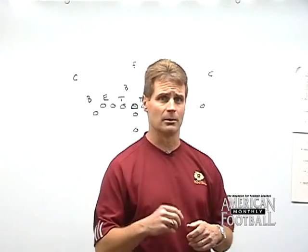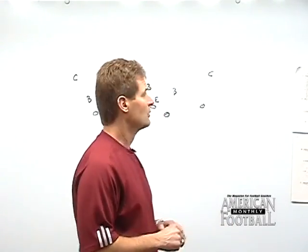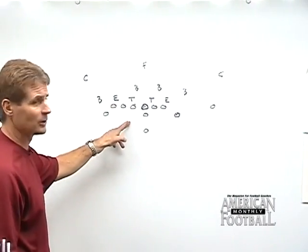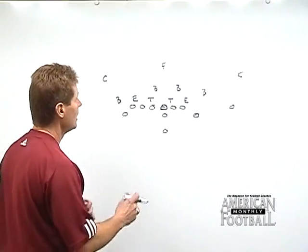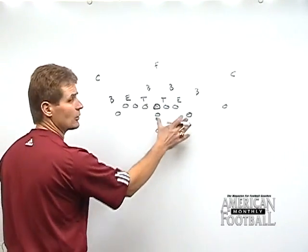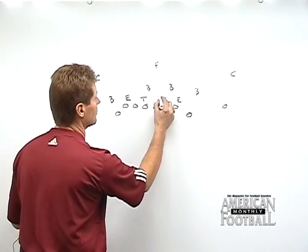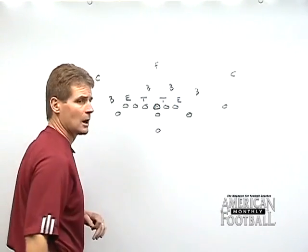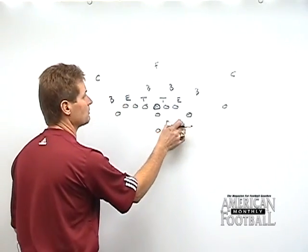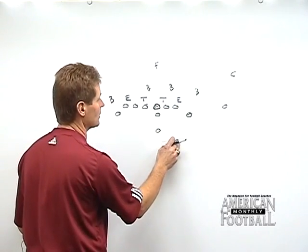I'm going to cover specifics for each position. I have here drawn a blue formation versus a 4-0 front defense — these are some looks that we get. I'll try to go through various looks so that you have the gist of what goes on. Basically, we rule block everything. Starting with the play side people: the play side tackle's rule is gap, bump lead backer.